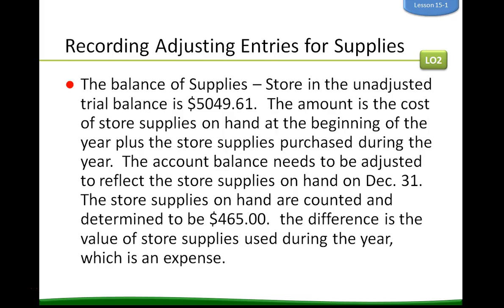The balance of supplies store in the unadjusted trial balance is $5,049.61 — the cost of store supplies on hand at the beginning of the year plus store supplies purchased throughout the year. The account balance needs to be adjusted to reflect store supplies on hand on December 31st. A physical inventory is taken and determined to be $465. The difference is the value of store supplies used during the year, which is also an expense.